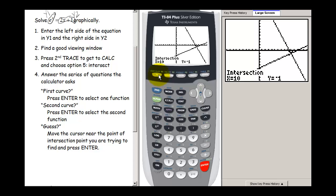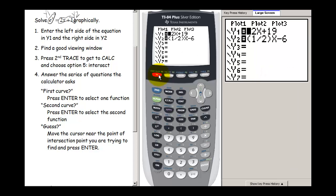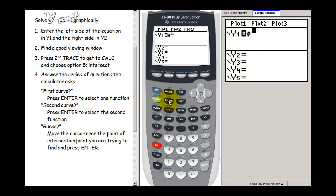So we're going to press our y equals button. I'm going to clear out these two functions. And I'm going to enter e to the x for y1. So remember we get e by pressing 2nd and then ln. And here's my x. So there's my first function.